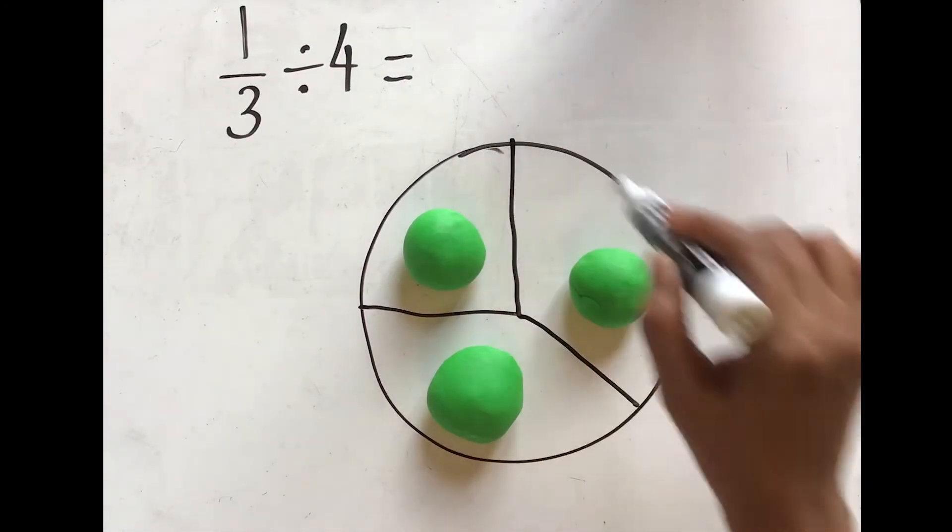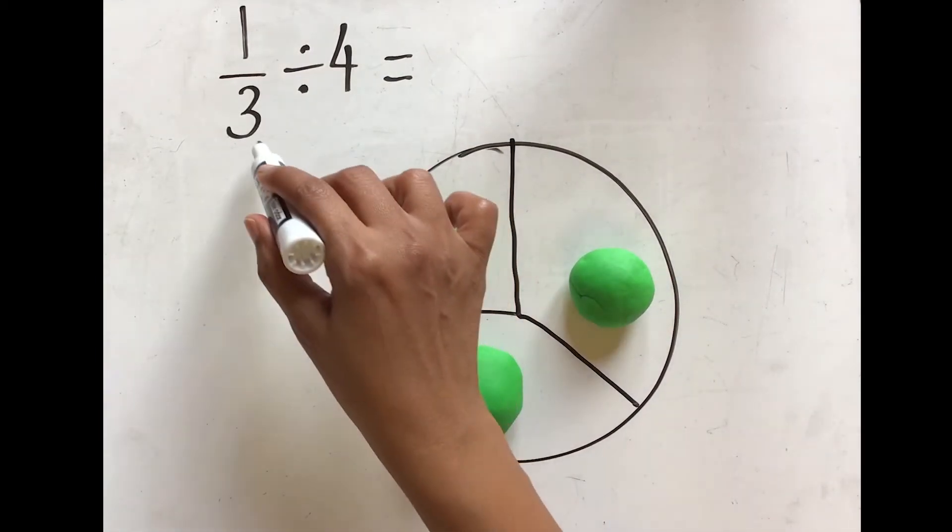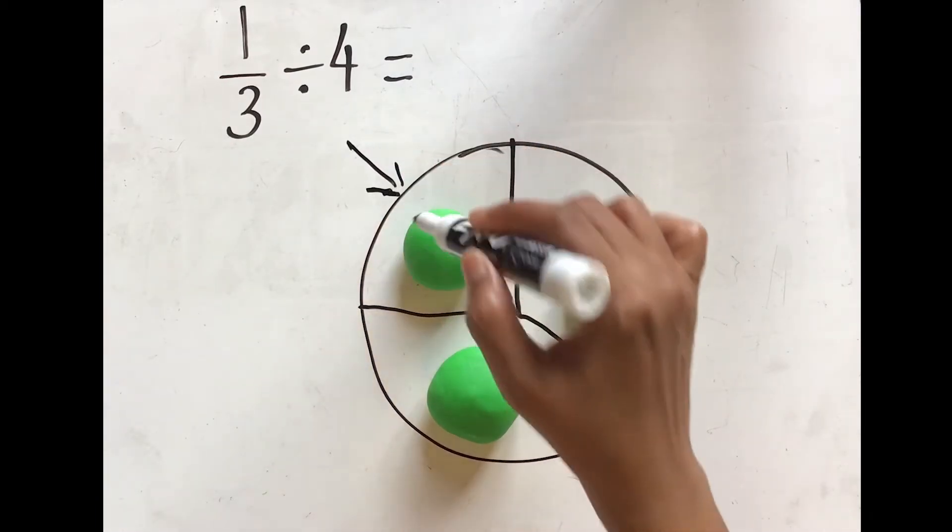As you can see, the entire ball of Play-Doh is split into 3 portions. Since we need to take only 1/3, we are going to focus only on this segment of the Play-Doh.